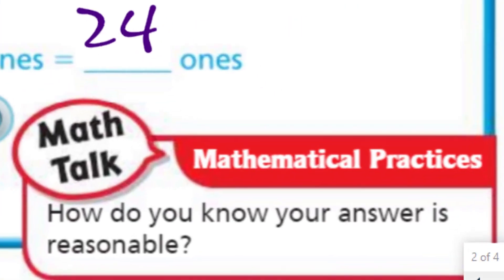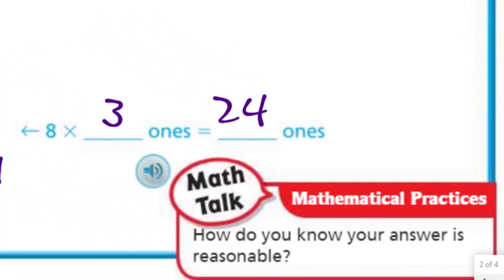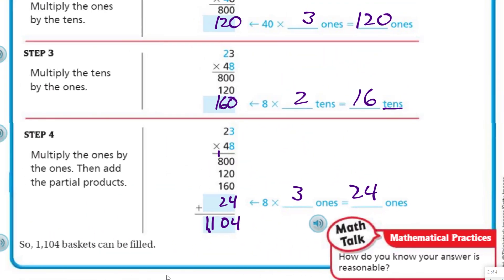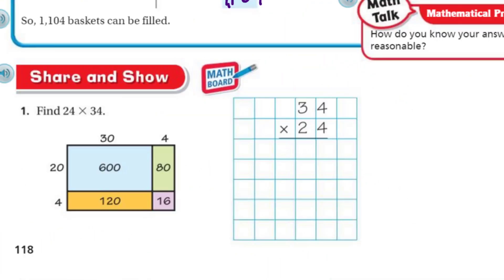How do you know your answer is reasonable? If our estimate was 1,000 and our actual answer is 1,104, then that's very reasonable.